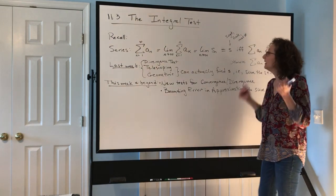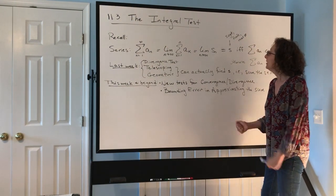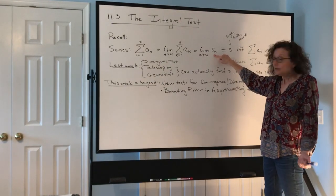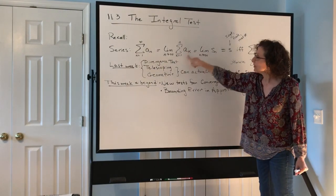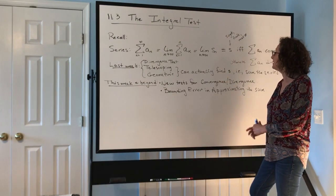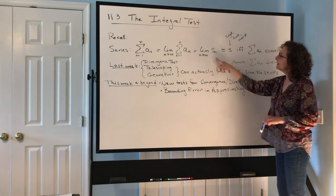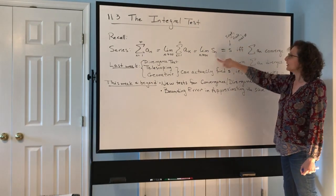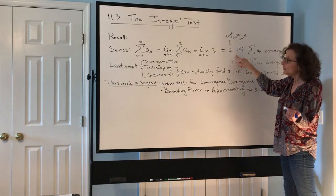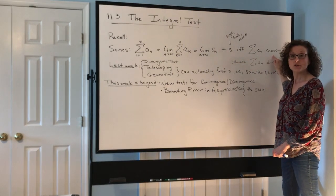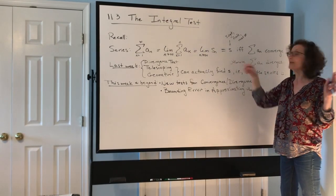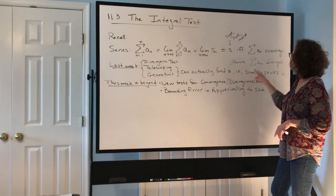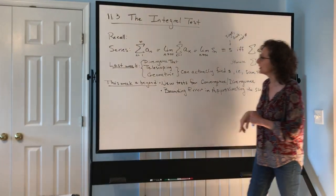S sub n is the nth partial sum, which is just adding up the first n terms of the series. We take the limit of this, and if that limit exists as some single finite real number, then we say that series converges to S. We've summed the series. Otherwise, if this limit doesn't exist, the series diverges.